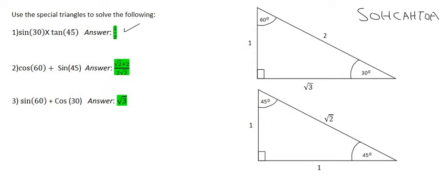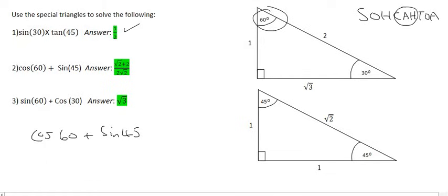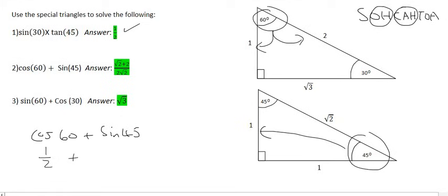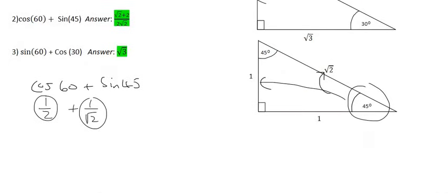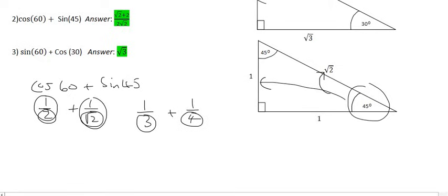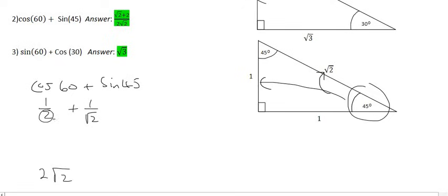Number two is cos of 60 plus sin of 45. We go to the 60 degree and cos is adjacent over hypotenuse, so that's one over two — a half. Plus the sin of 45: sin is opposite over hypotenuse, so that's one over the square root of two. Now we have two fractions being added together, so we need a common denominator. When you don't know what the common denominator is, a nice way to do it is to multiply the two denominators together, giving a common denominator of two square root two. This two still needs to be multiplied by square root two, and what you do to the bottom you do to the top. And this one still needs to be multiplied by two. So we end up with square root two over two root two plus two over two root two.